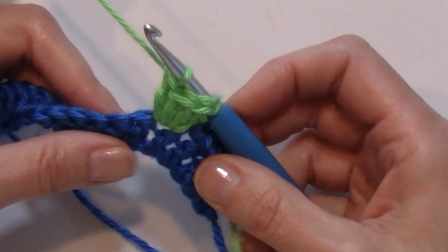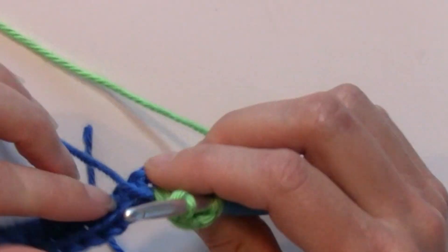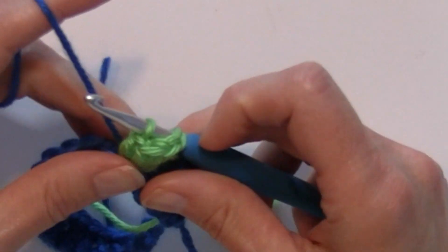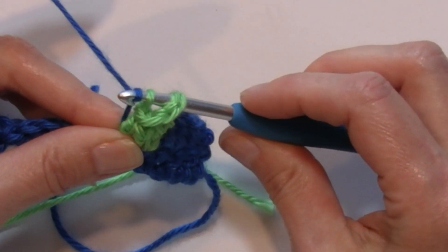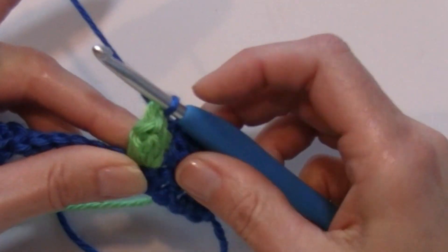Now I'm changing my color back to my first color, so I'm going to drop that color and pull back in my color A, and I'm going to finish that popcorn by yarning over and pulling through both of those loops there.